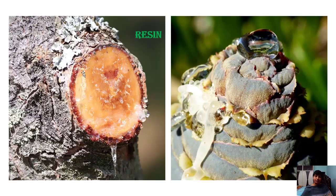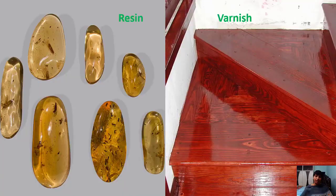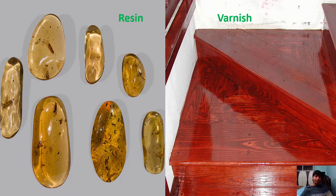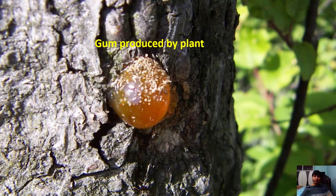Another secondary metabolite produced by plants is resin. Resins are produced mainly from pine trees. This is a pine cone. Resin is sticky and is used in varnishes to paint wooden furniture or wooden doors.